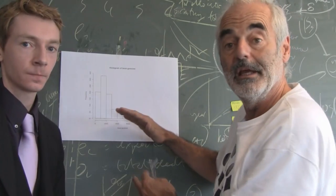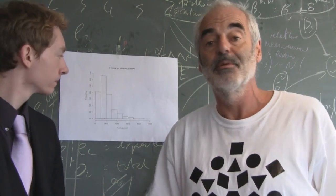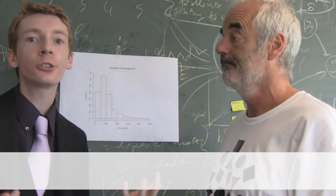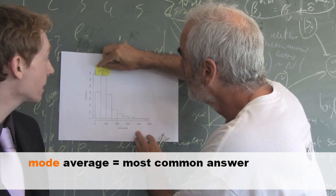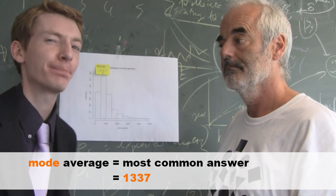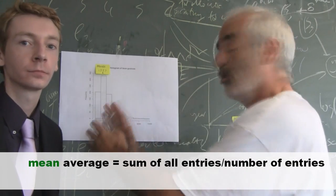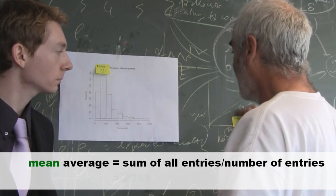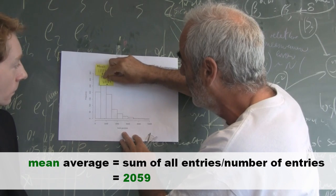The problem when we've got a distribution like this, a sort of skew distribution, is that it's not at all clear what measure we should use when we want to say the average opinion. There's a number of different averages we could choose. Right. So, we could use the most common answer, which is called the mode average. And in this case, the most common answer was 1,337. Bunch of nerds. What else could we use? We could use the mean, the arithmetic mean. It means you add up all the guesses that were made and divide by the number of people who entered the competition. And if you do that, you get a considerably higher value, about 2,059 jelly beans.